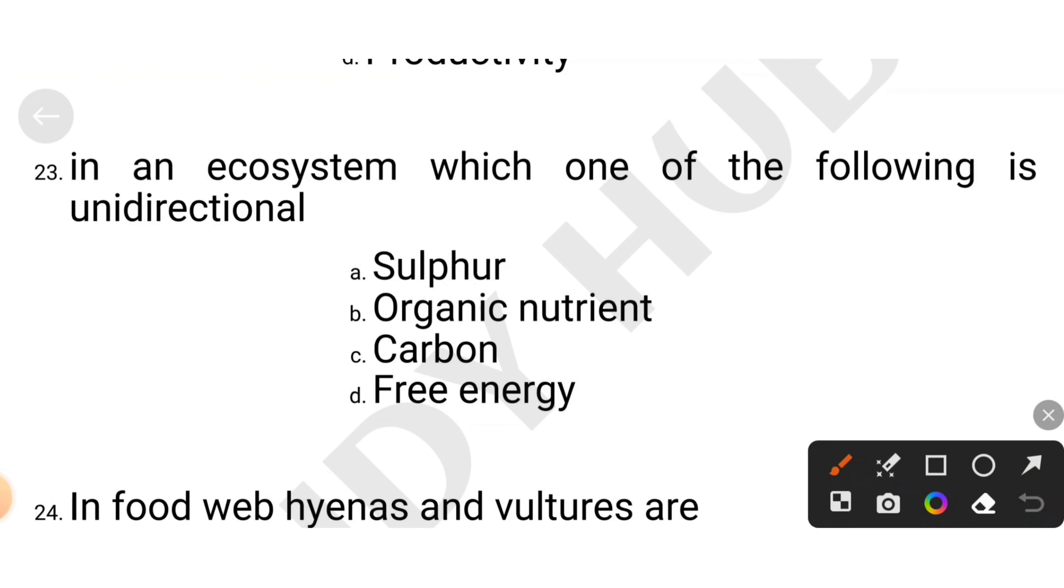In an ecosystem, which one of the following is the unidirectional. Sulfur, organic nutrient, carbon, or free energy. Unidirectional, always energy.